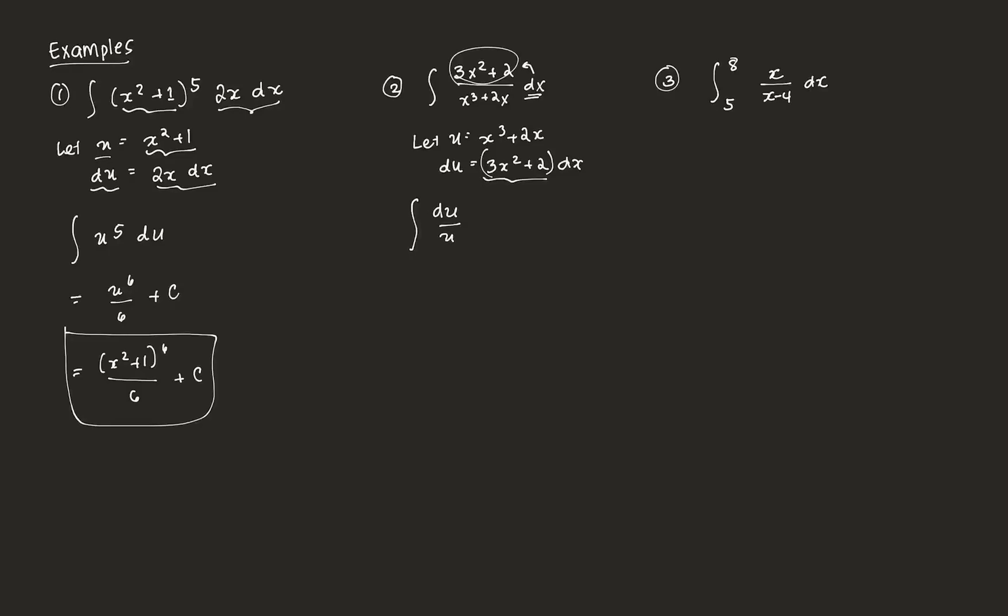If you get that integral, by our properties of integral, we can isolate this out. We can just transform this into 1 over u du. That's the same thing. Then we can determine that this is just going to be ln(u). So the integral will be equal to ln(u) plus c. But we already know what u is, so that's ln(x³ + 2x) plus c. This is the answer to that integral.